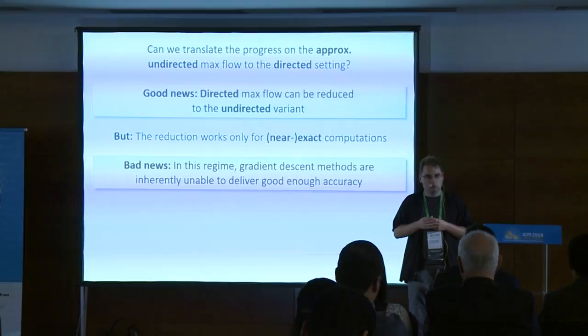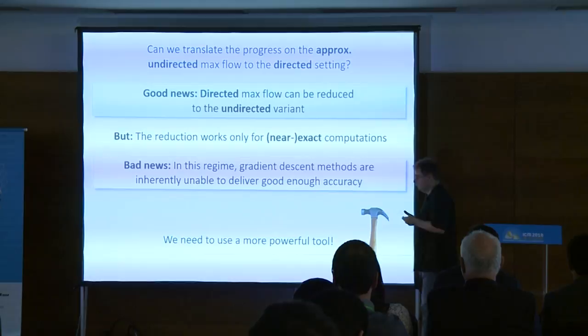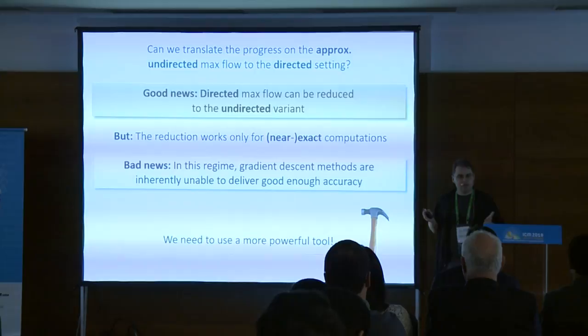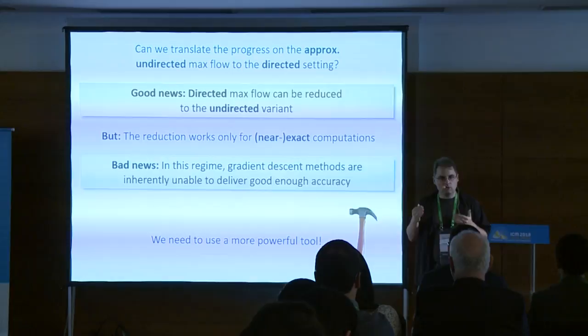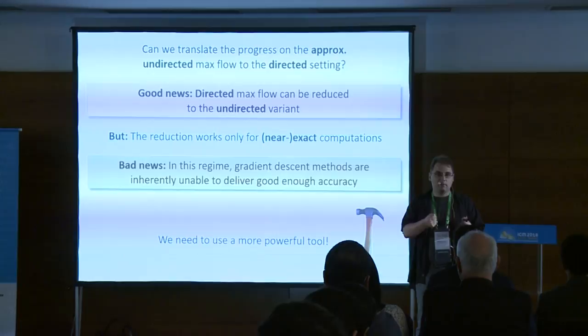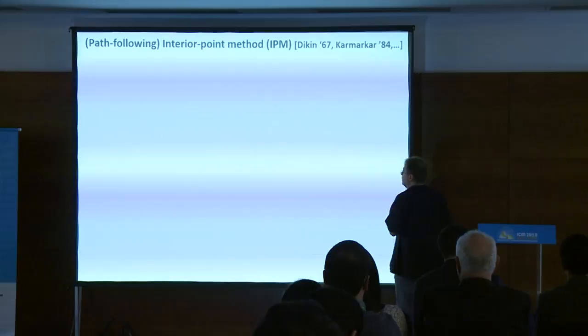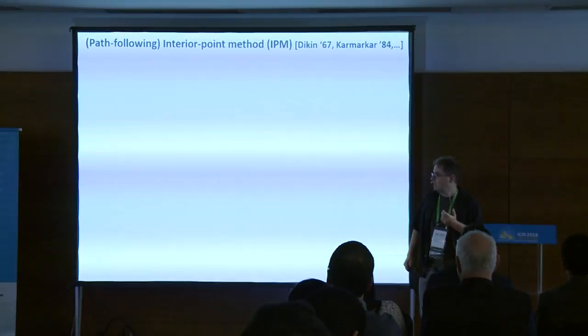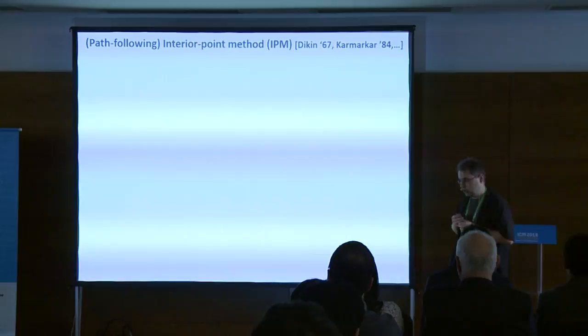The good news is that continuous optimization is a field with a lot of tools, and they really understand the limitations of gradient descent, so they also have ways of trying to circumvent them. This hammer might not work all the way, but there is a bigger hammer: something called interior point methods. In general, these are approaches to solving linear programs or even more general convex programs.